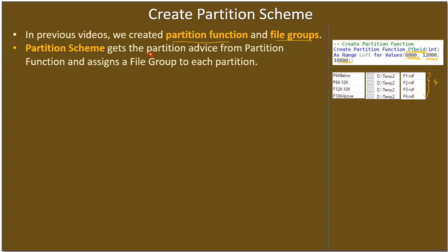The partition scheme gets partition advice from the partition function — so the partition scheme is talking to the partition function. Not only that, it also assigns a file group to each partition. The partition scheme links to the partition function, knows what value ranges are available for partitioning, and for each partition assigns the appropriate file group. Those two jobs are what the partition scheme does.